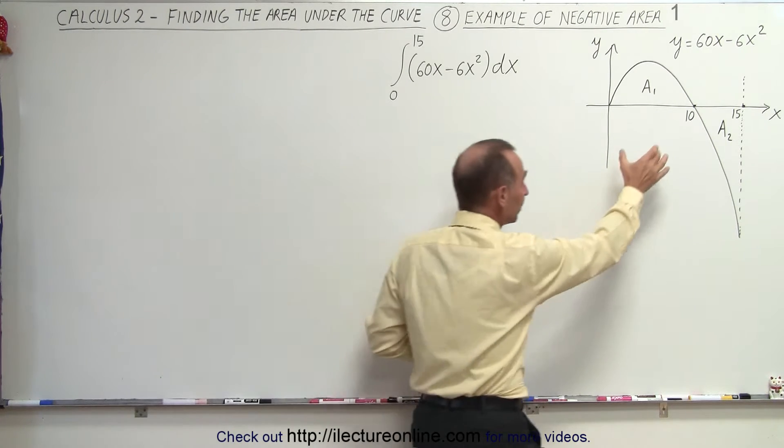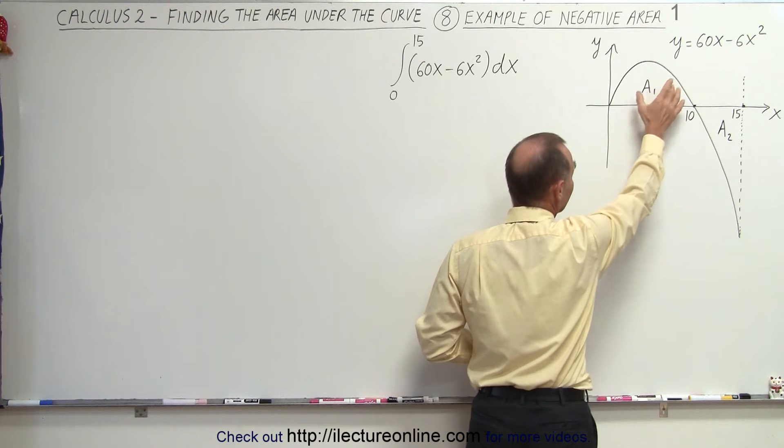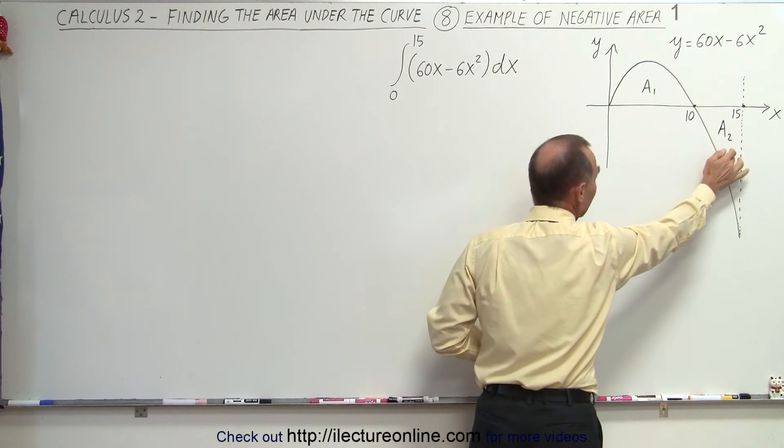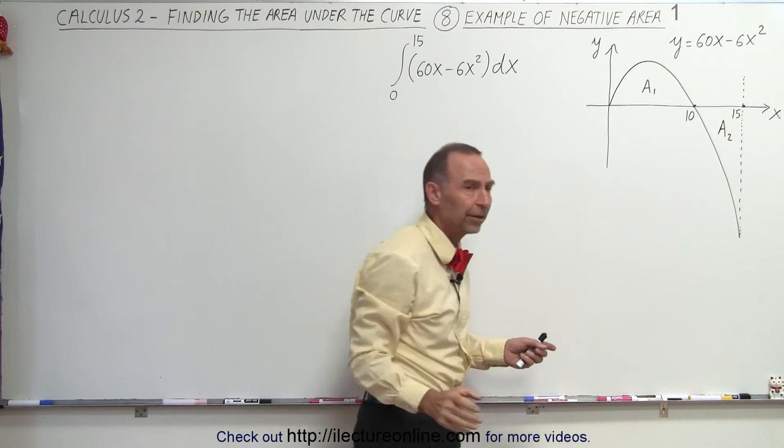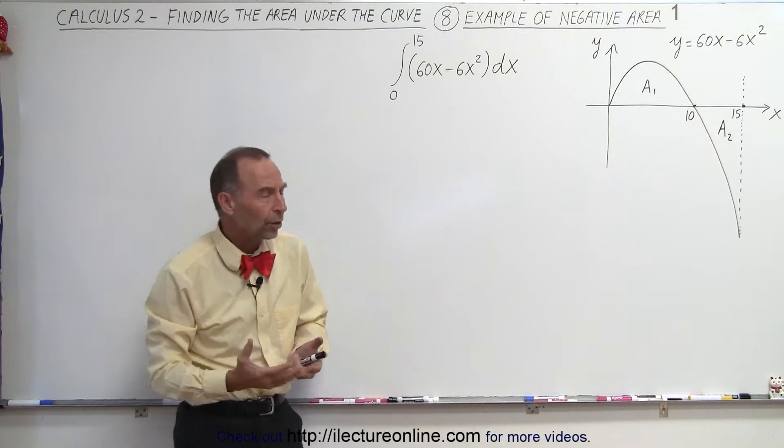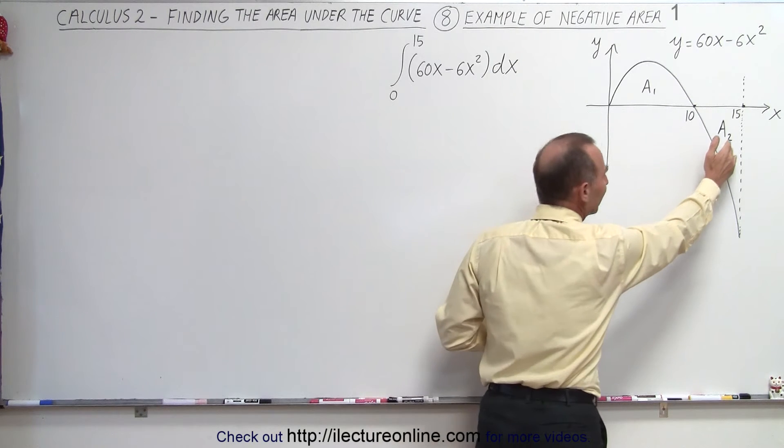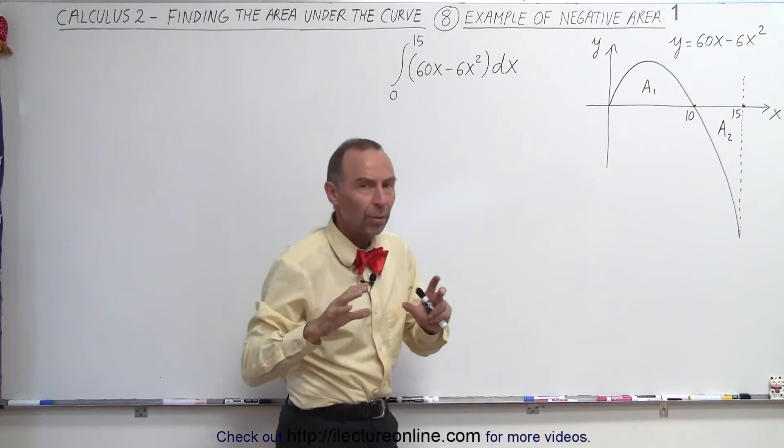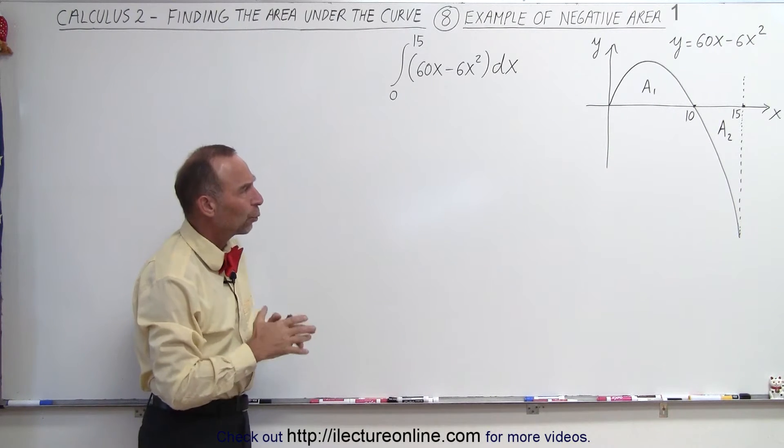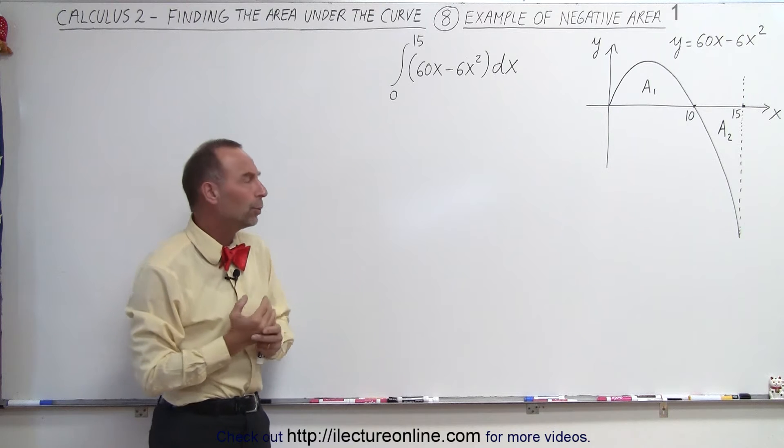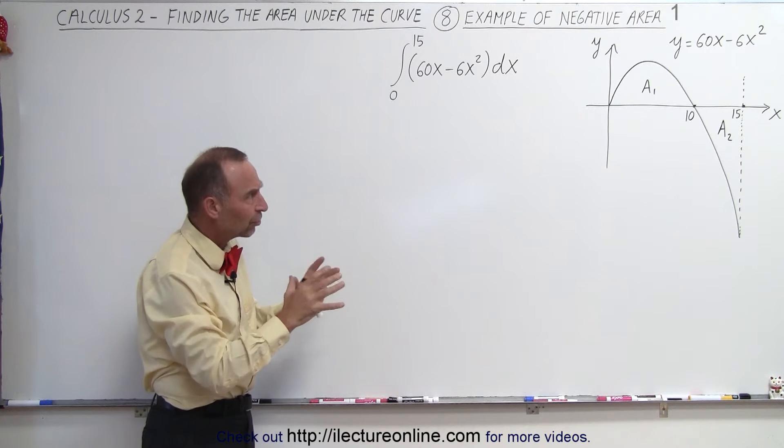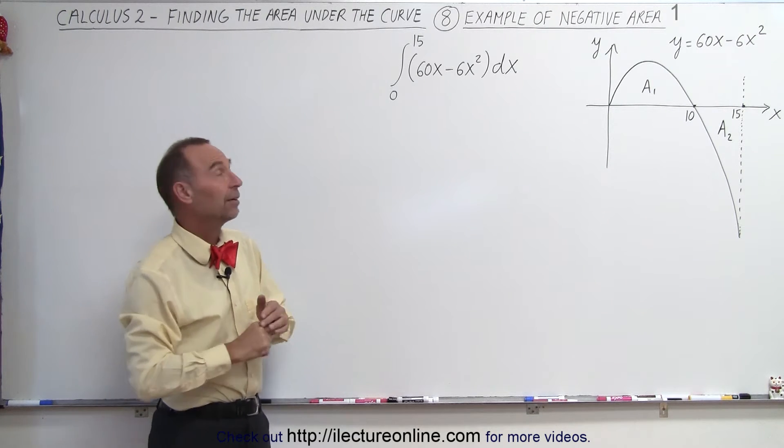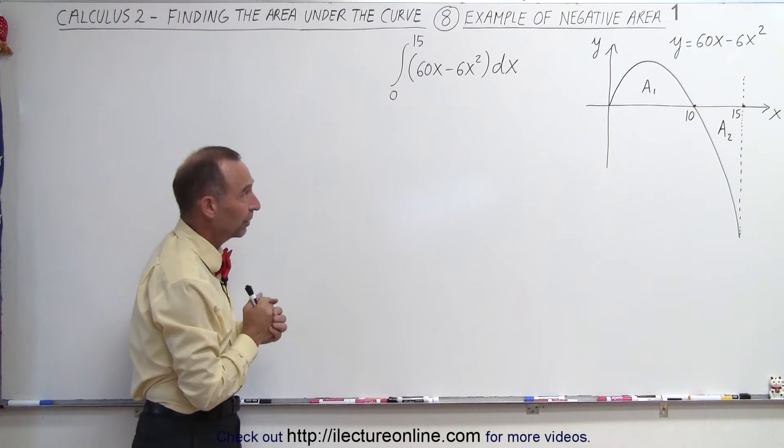It turns out that the area called A1 here in this drawing is indeed positive area and the area over here is indeed negative area. And sometimes we want to call this negative area and sometimes we want to look at that as being additional positive area. And so how do we know the difference? When do we use one? When do we use the other? Let's first understand what the concept of negative area is by solving this particular integral.